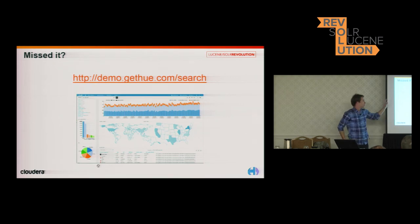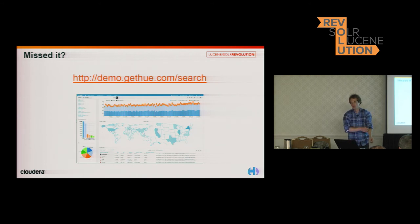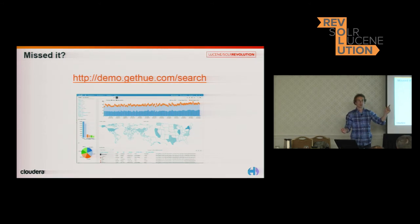If you missed the demo, we have a live demo online. We usually use Apache logs because they are cool for demoing, but the taxi dataset was pretty good. The only problem with the dataset is that it's anonymized, so I had to use two collections — one for how much they paid and one for the location — and you can't join them back, which is a shame, but it would have been cool.